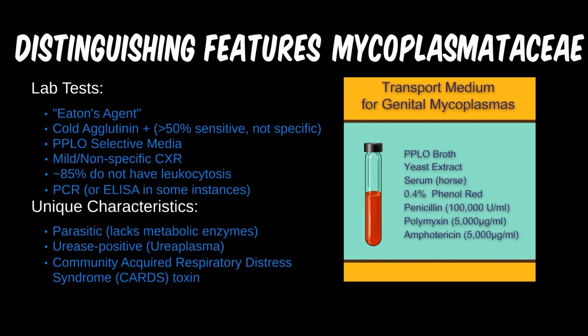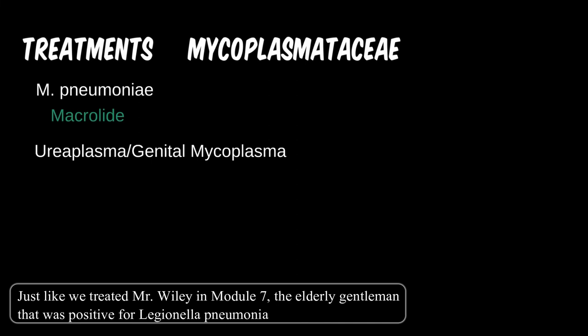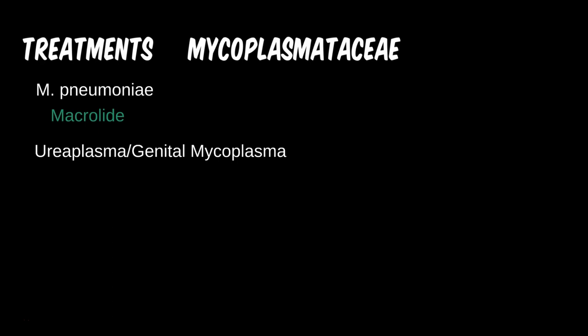Consider which antibiotics covered so far act against the bacterial cell wall — how effective would they be against a bacterium with no cell wall? This is part of why the Mycoplasmataceae family has traditionally been difficult to treat. However, antibiotics have advanced considerably since the 1960s. Like other atypical pneumonia discussions, a macrolide is the first choice, given empirically. For urogenital infections by this family, a macrolide is still probably first choice. Tetracyclines used to be preferred, but many species are now resistant. Azithromycin is a good choice and also covers potential co-infections with Chlamydia. If azithromycin is not an option on a test question, clindamycin would be a good alternative.